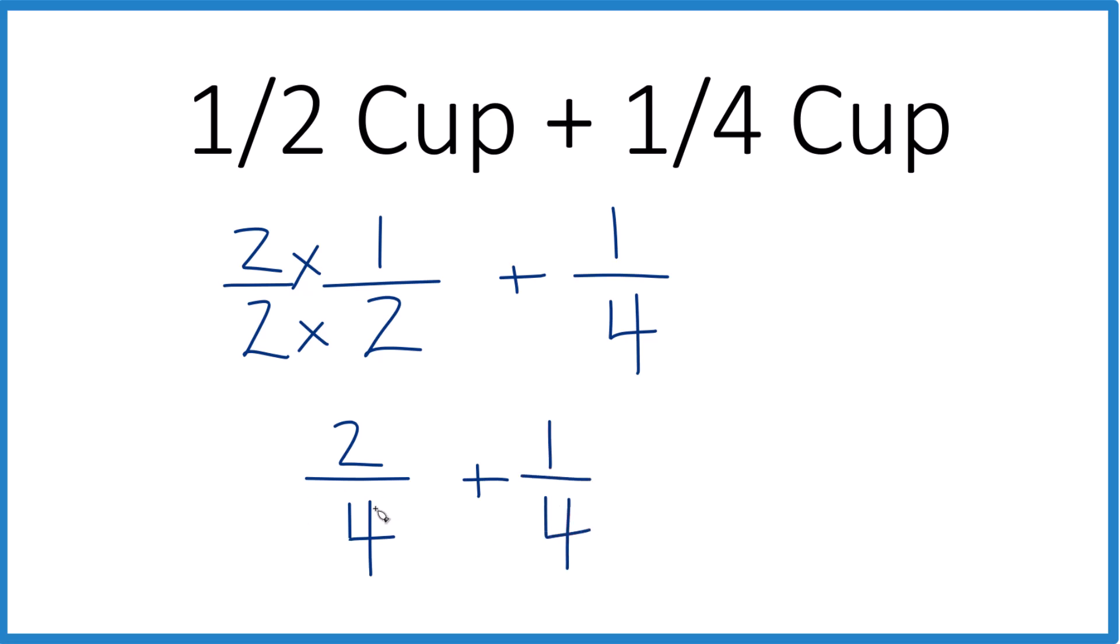But now, since these numbers here are the same, we're just going to keep that the same. And then we add these denominators here. We get 2 plus 1 is 3. And you end up with 3/4.